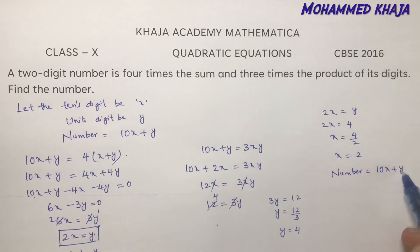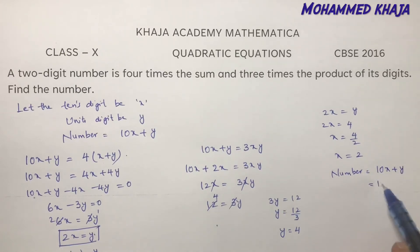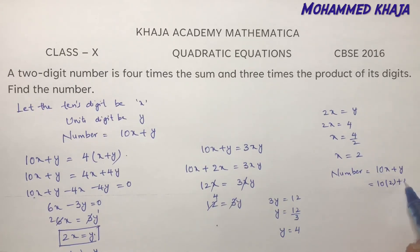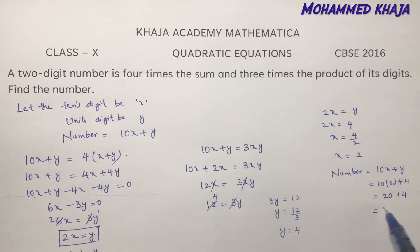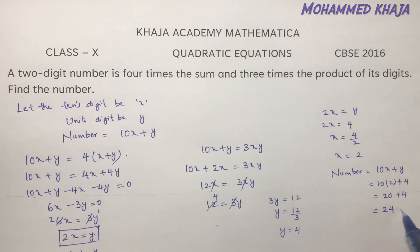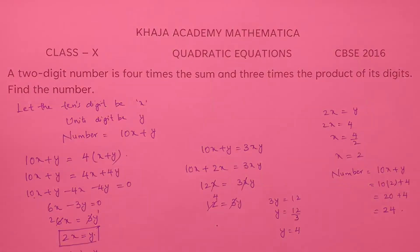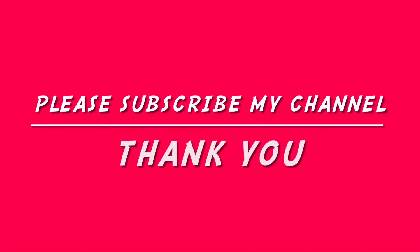The number is 10x plus y, which is 10 times 2 plus 4, giving 20 plus 4. So the number is 24.